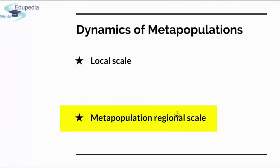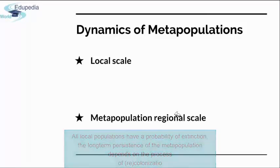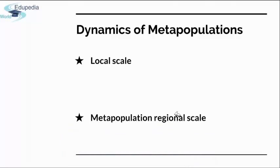It is important to mention the connection to extinction. The significance of the metapopulation concept lies in the probability of extinction: since all local populations have a probability of going extinct, the long-term persistence of the metapopulation depends on recolonization. The probability of local extinction for the core population remains extremely small if the metapopulation dynamics stay in a healthy balance.